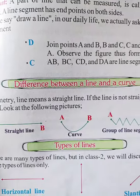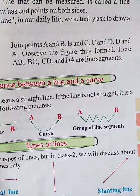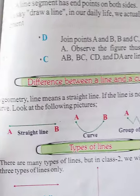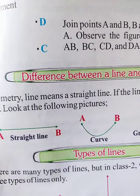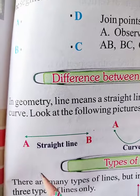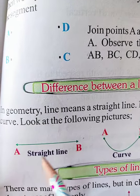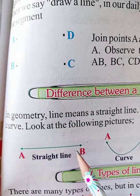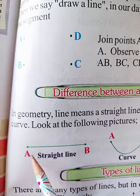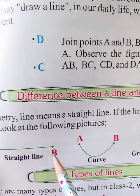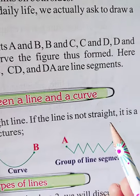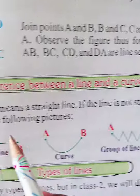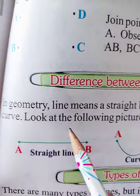Here, the difference between a line and a curve. In Geometry, line means straight line — from A to B. That is your straight line. And if the line is not straight, it is a curve.